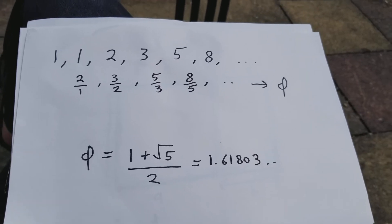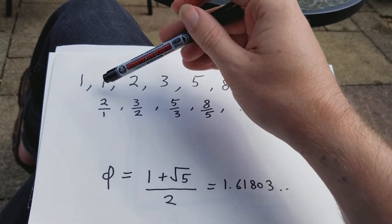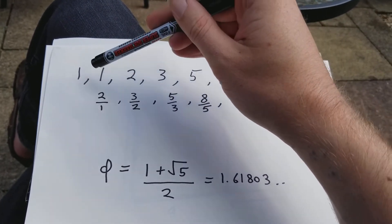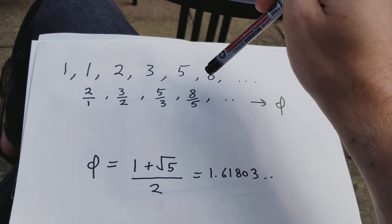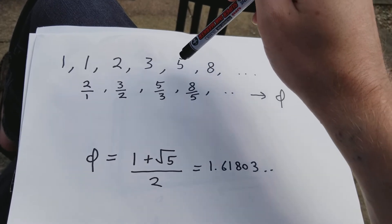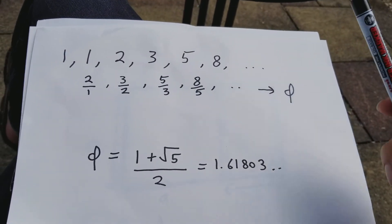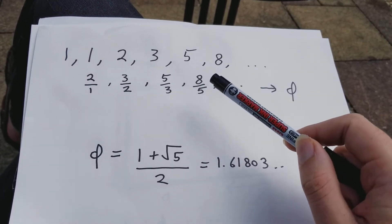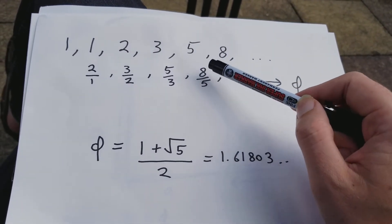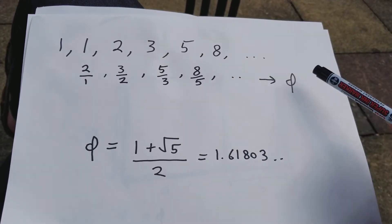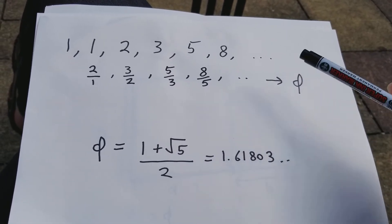Let's have a look at what it is. Start with 1 and 1, add them together and get 2. Then 2 plus 1 is 3, 3 plus 2 is 5, 5 plus 3 is 8, and so on. To get the next number in this sequence, we add together the current number and the last one. This is the Fibonacci sequence. If you look at Fibonacci members that are far out and divide the last number by the second to last, the result approaches the golden ratio. This is one way to define what the golden ratio is.